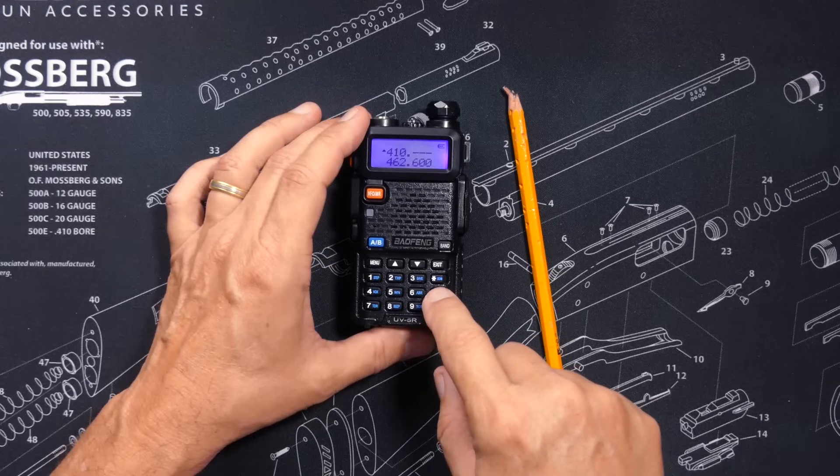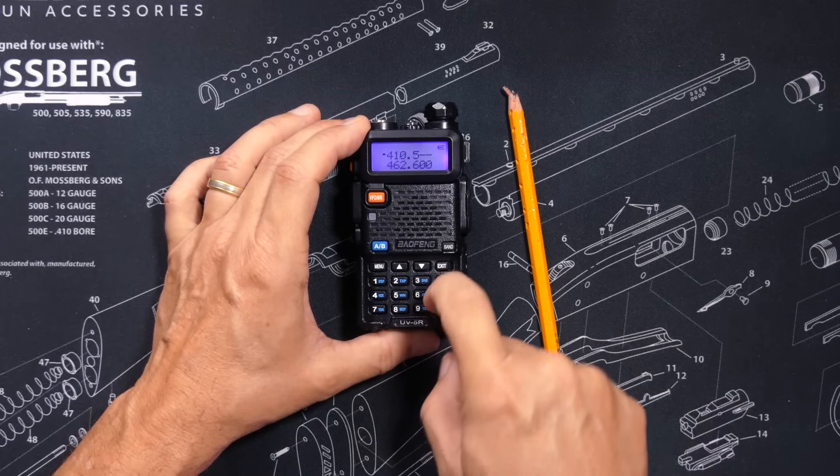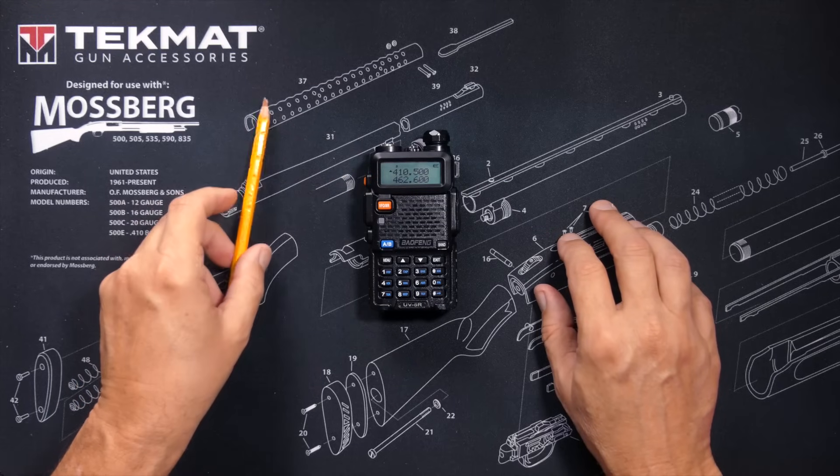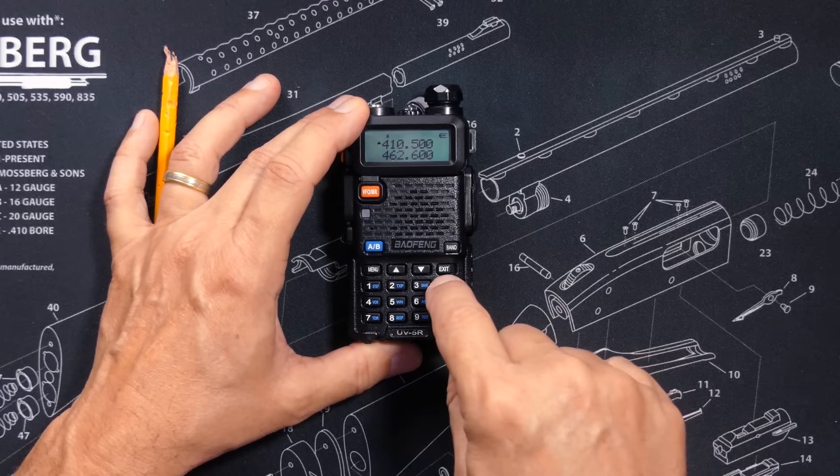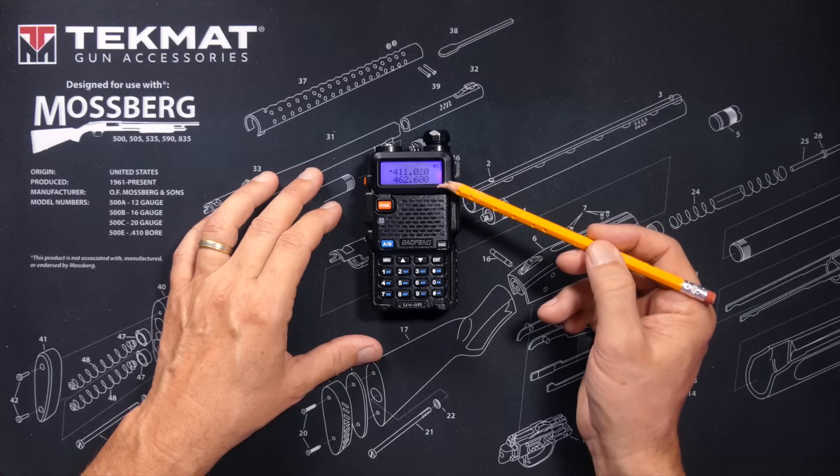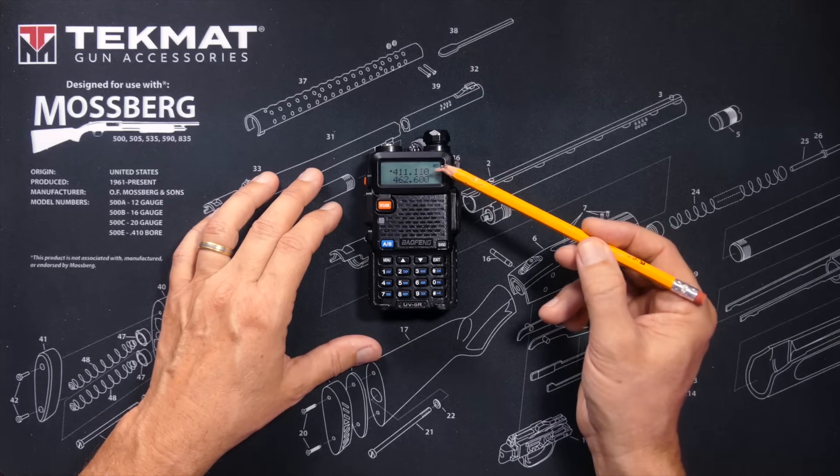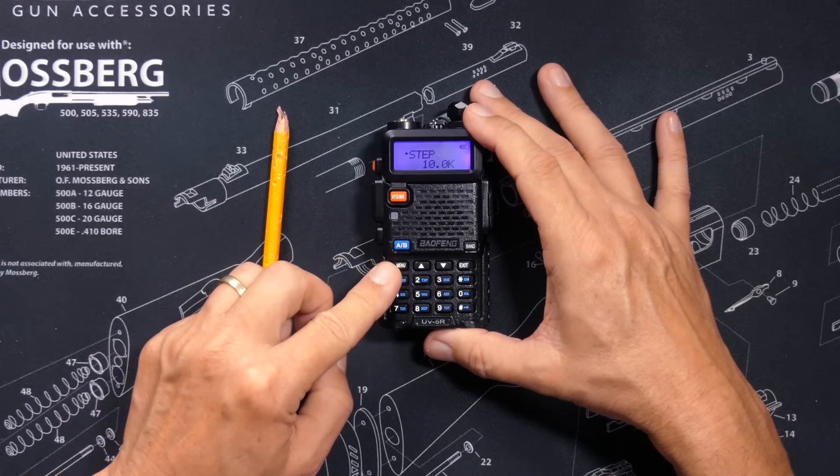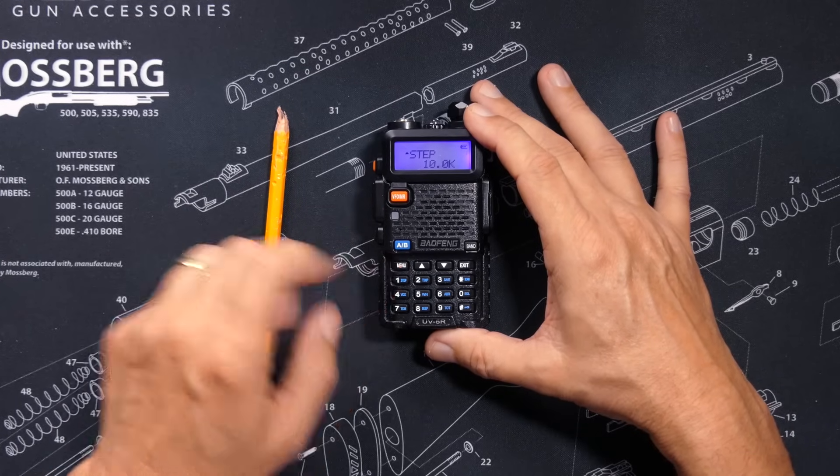To start scanning through frequencies, just enter the frequency you wish to start scanning at - for example, 410.500 - and then press and hold the scan button for a second. The radio will begin scanning through the frequencies in frequency increments set in your step setting, which is menu option item number one.